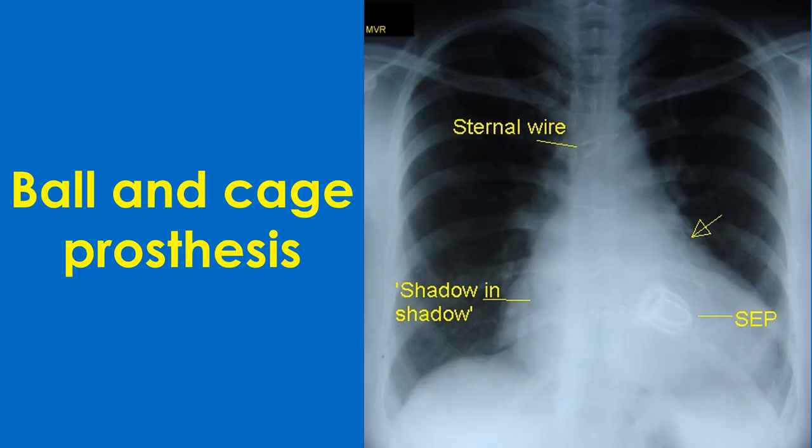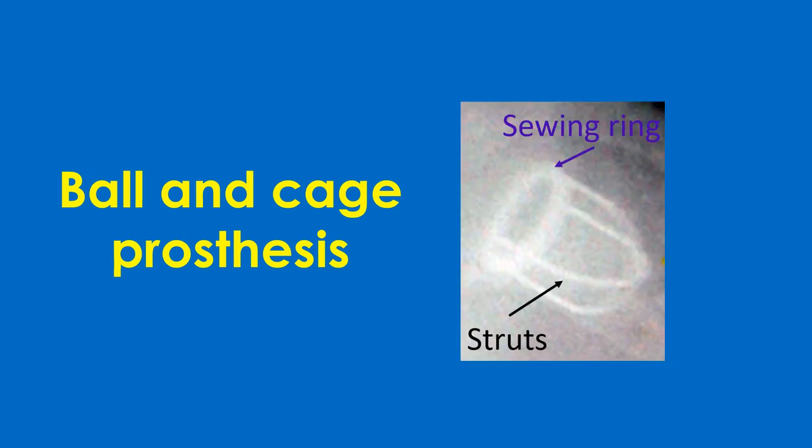The older valves were of ball-and-cage design. The prototype was the Starr-Edwards valve, which was the workhorse with valves functioning well in a person over five decades. Due to other problems, the valve has been discontinued. The design consists of a cage with a sewing ring and struts. The mitral valve had 4 struts while the aortic had 3 struts. A ball-shaped poppet moved back and forth during the cardiac cycle to open and close the valve.